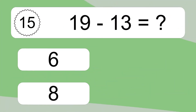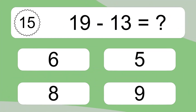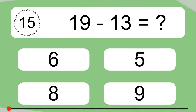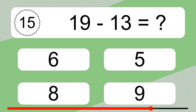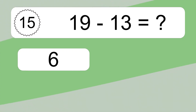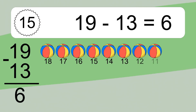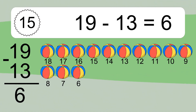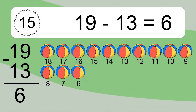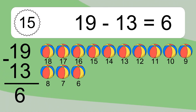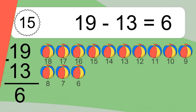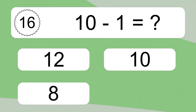19 minus 13 equals what? 19 minus 13 equals 6. Let's count it. 18, 17, 16, 15, 14, 13, 12, 11, 10, 9, 8, 7, 6.